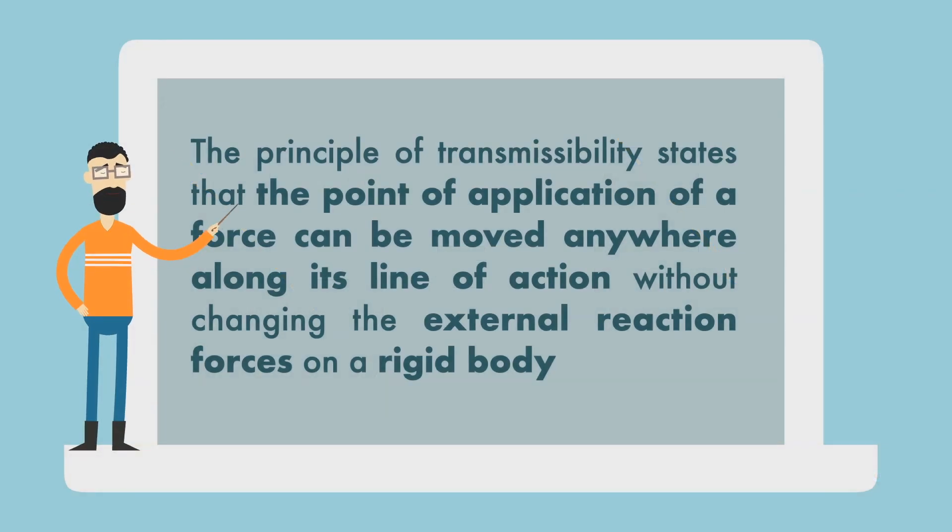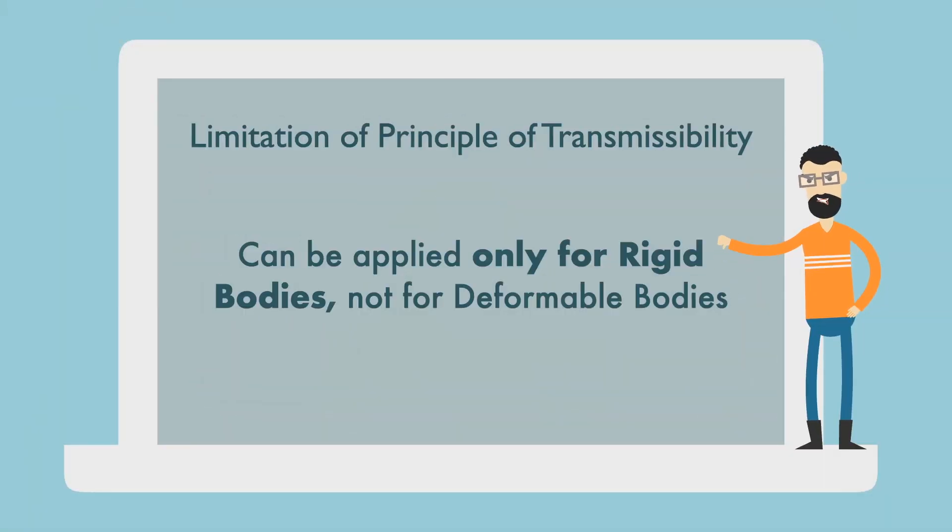The principle of transmissibility states that the point of application of a force can be moved anywhere along its line of action without changing the external reaction forces on a rigid body. What are the limitations? The principle of transmissibility can only be used for analyzing the external forces on rigid bodies, not for the forces on deformable bodies.